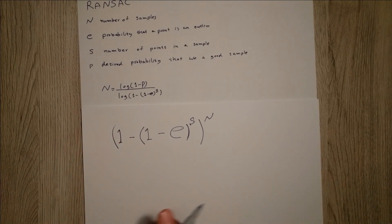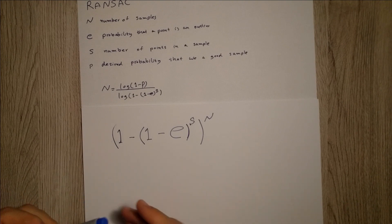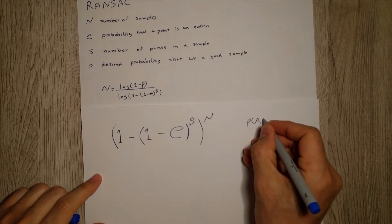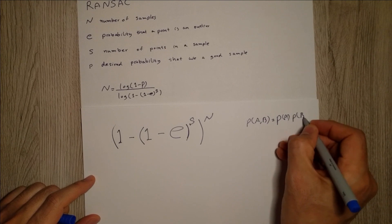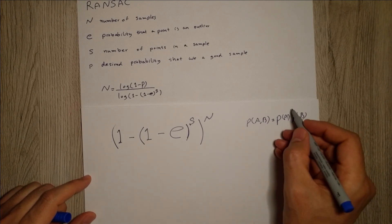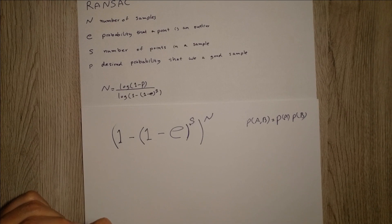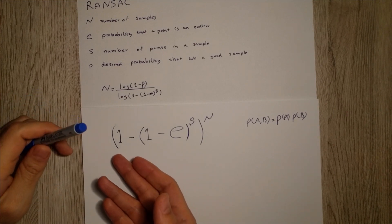And since our data, the assumption is our data points are independent of each other, so the joint probability is just P of A and B equals PA times PB. And if we write it down S times, it's going to be power S. So what does this mean? The probability that we choose N samples and they are contaminated, there are outliers in our data.